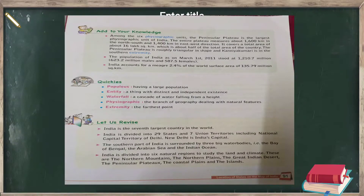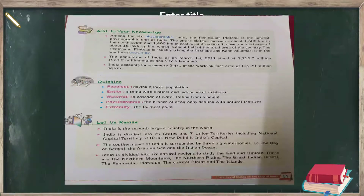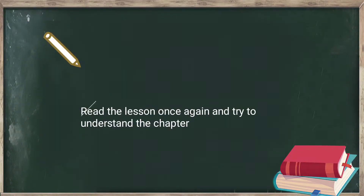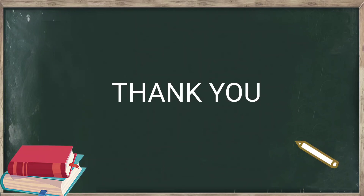Please read the 'Add to Your Knowledge', Quickies and Let's Revise sections. These include definitions of key terms: populous – having a large population; entity – a thing with distinct and independent existence; waterfall – a cascade of water falling from a height; physiographic – the branch of geography dealing with natural features; extremity – the farthest point. Please go through the chapter once again covering the states and capitals, union territories, major landforms, and rivers of India. Thank you, class. Have a nice day.